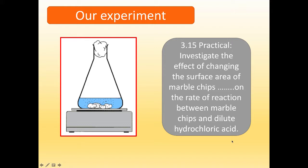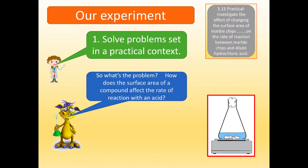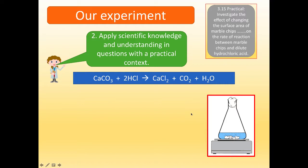So here's our practical: to investigate the effect of changing the surface area of marble chips on the relative reaction between marble chips and dilute acid. The first experimental skill is this: solve problems set in a practical context. This very much is a practical context. But what's the problem? The problem we're going to investigate is how does the surface area of a compact affect the rate of reaction with an acid. In particular, we're going to use marble chips. Marble chips are calcium carbonate. So we're going to add marble chips of various sizes and observe the effect on the rate of reaction. We're changing here the size of marble chips.